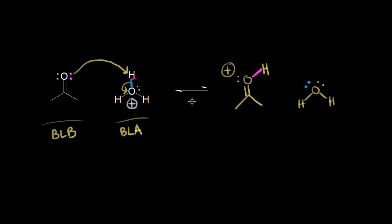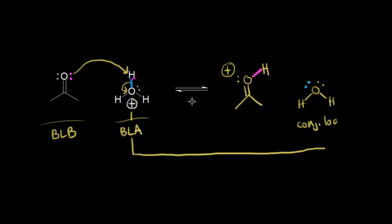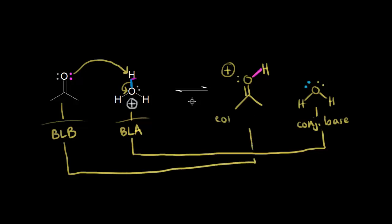Identifying our conjugate acid-base pairs again: on the left, hydronium H3O+ is functioning as our Bronsted-Lowry acid. Take a proton away from that and you're left with the conjugate base — so on the right, water is our conjugate base. And on the left, acetone is functioning as a Bronsted-Lowry base, so on the right, this must be the conjugate acid. So we've identified our conjugate acid-base pairs.